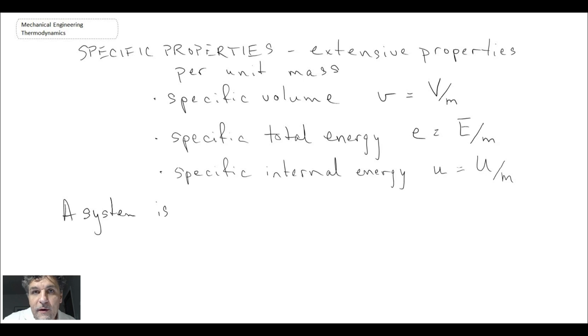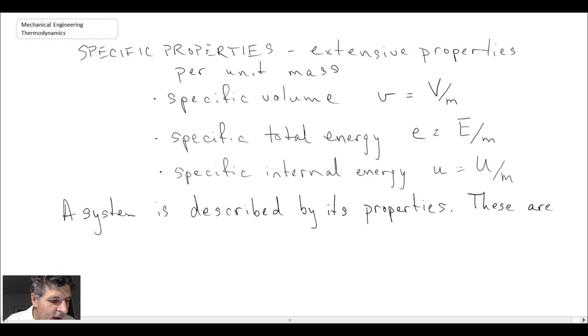So we use properties to describe the state or the system itself. A system is described by its properties. Another thing we can say is that these are macroscopic values that are assigned without knowledge of the history of the system.